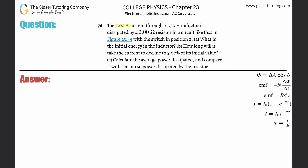Problem 76: A 5 amp current through a 1.5 henry inductor is dissipated by a 2 ohm resistor, with the switch in position two as in figure 23. Part A asks for the initial energy in the inductor. We have the formula from previous problems: the energy in an inductor equals one half multiplied by the inductance multiplied by the current squared.